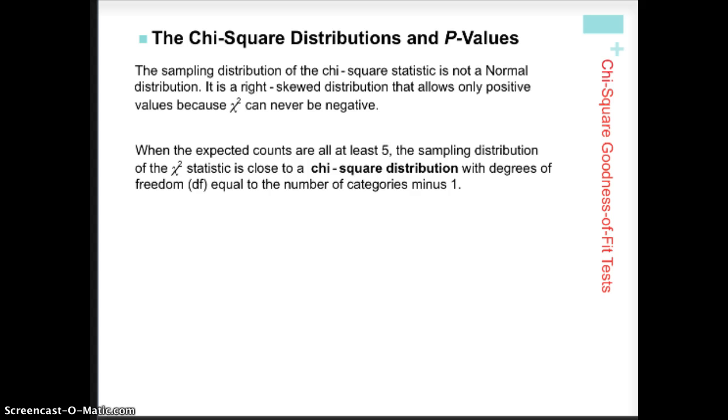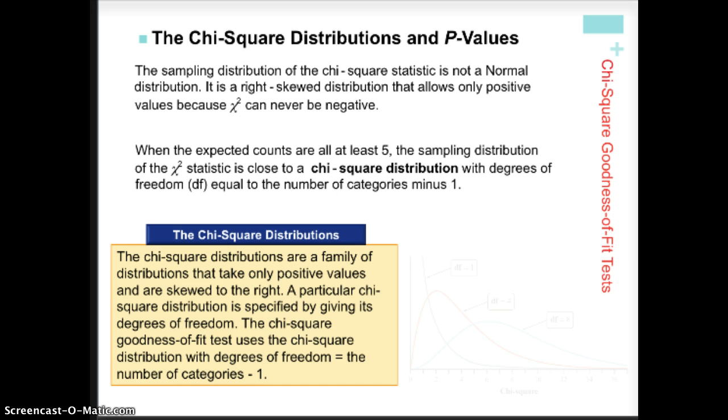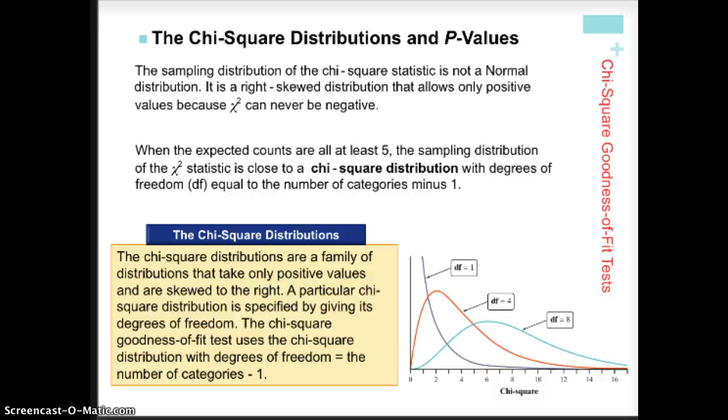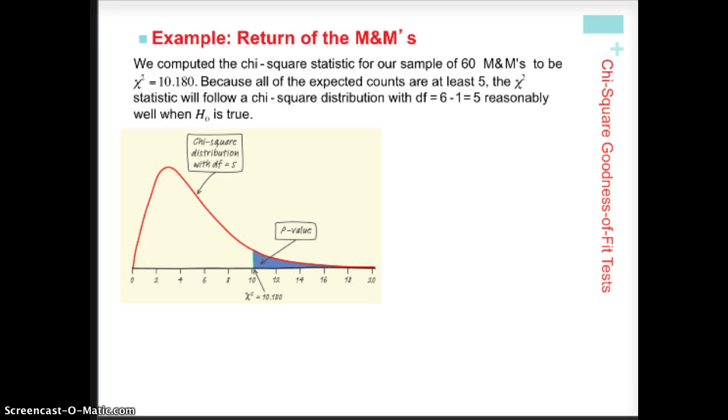It never has any negative values, so it's to the right-hand side of the y-axis, if you will. And you can see from this slide that there are many, an infinite number, in fact, of chi-square distribution curves, and what they are dependent on is the degrees of freedom. So the degrees of freedom for the chi-square goodness of fit test is the number of possible values that you could have for your variable minus one. So in our case, our variable is color of M&M, and there are six different colors.